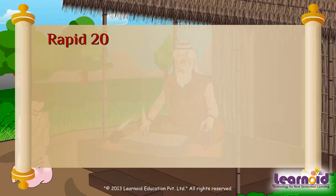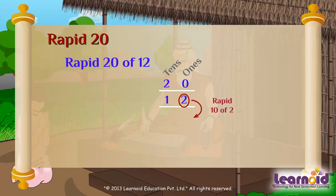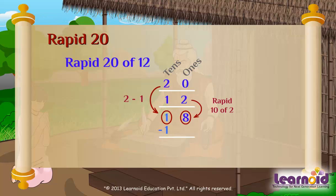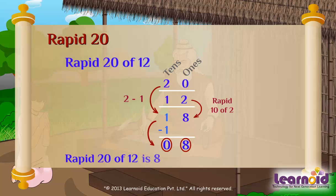Now let's find rapid 20 of 12. Rapid 10 of 2 is 8. Then 2 minus 1 minus 1 is 0. So rapid 20 of 12 is 8.